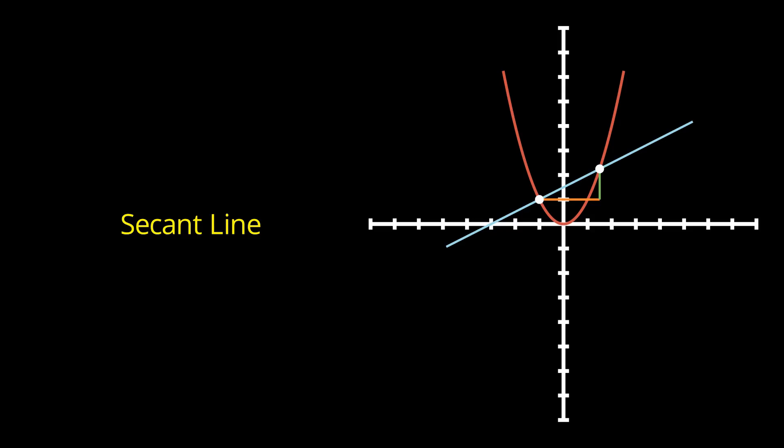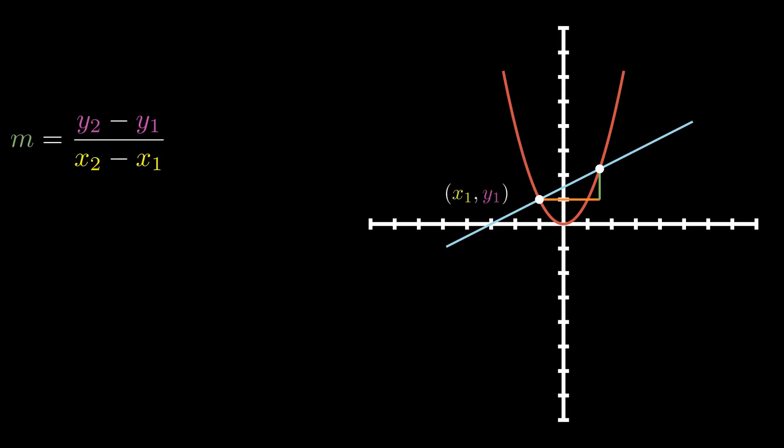Now let's say we wanted to find the slope of this line. To find the slope of this line, what we can do is pick out two points on this line and plug it into our slope formula. As a refresher, our slope formula is m equals y2 minus y1 all over x2 minus x1. So we can say that this first point represents x1 and y1, and we can say that our second point represents x2 and y2.